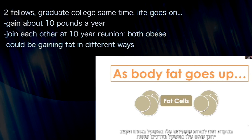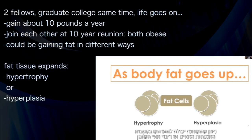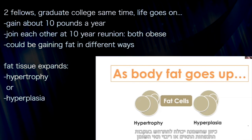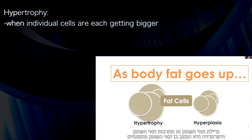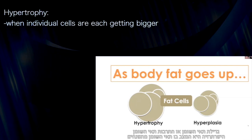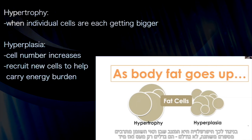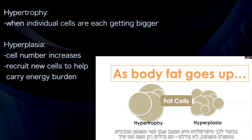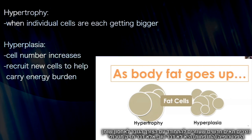These two men, who appear to be gaining fat at the same rate, could be gaining fat in different ways. Specifically, fat tissue expands either through hypertrophy or hyperplasia. With hypertrophy, individual cells themselves are getting bigger — there's no change in cell number, just the cell itself expanding. With hyperplasia, the cell number is changing — fat cells that start to get a little big simply recruit new fat cells to help carry the energetic burden of storing ever more fat.